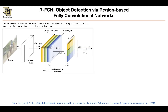To fix that problem, you can have position-sensitive score maps — because you want to be sensitive to translation, to the position in your image. You have a convolution that gives you a bunch of feature maps. You take those feature maps and apply another convolution that increases the size of your feature map to be K² × (C+1), where C is the number of classes, one is the background, and K is the size of your ROI pooling. That outputs the entire thing, but you interpret each part differently.